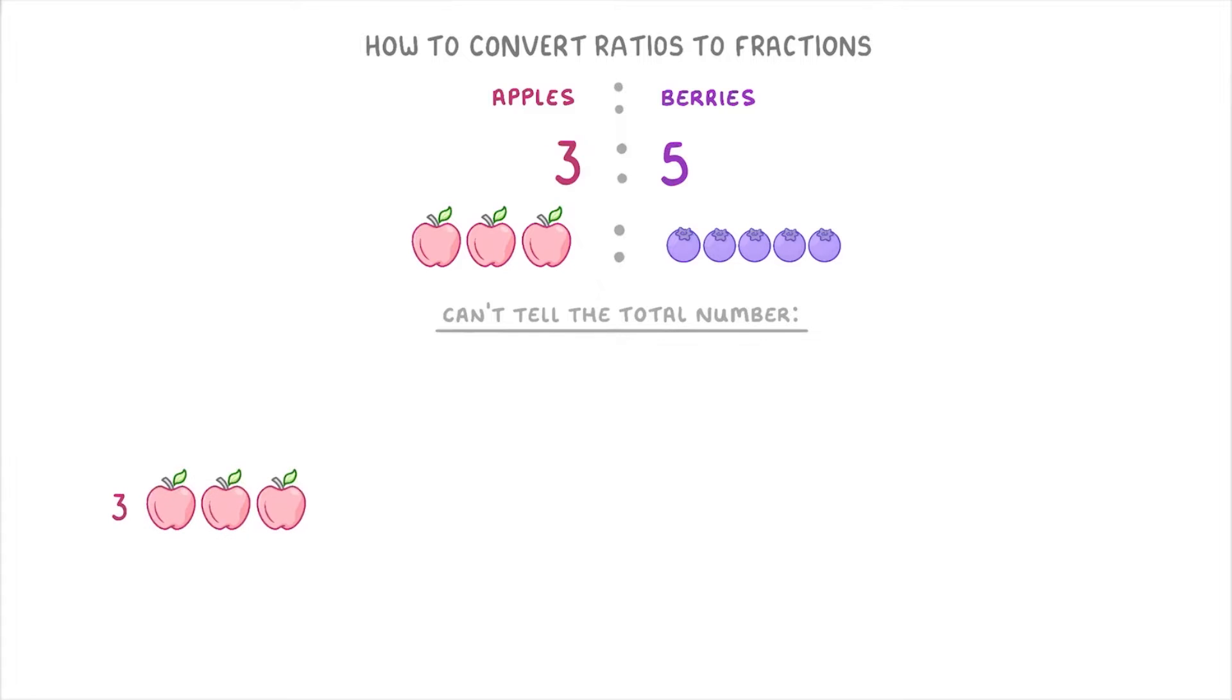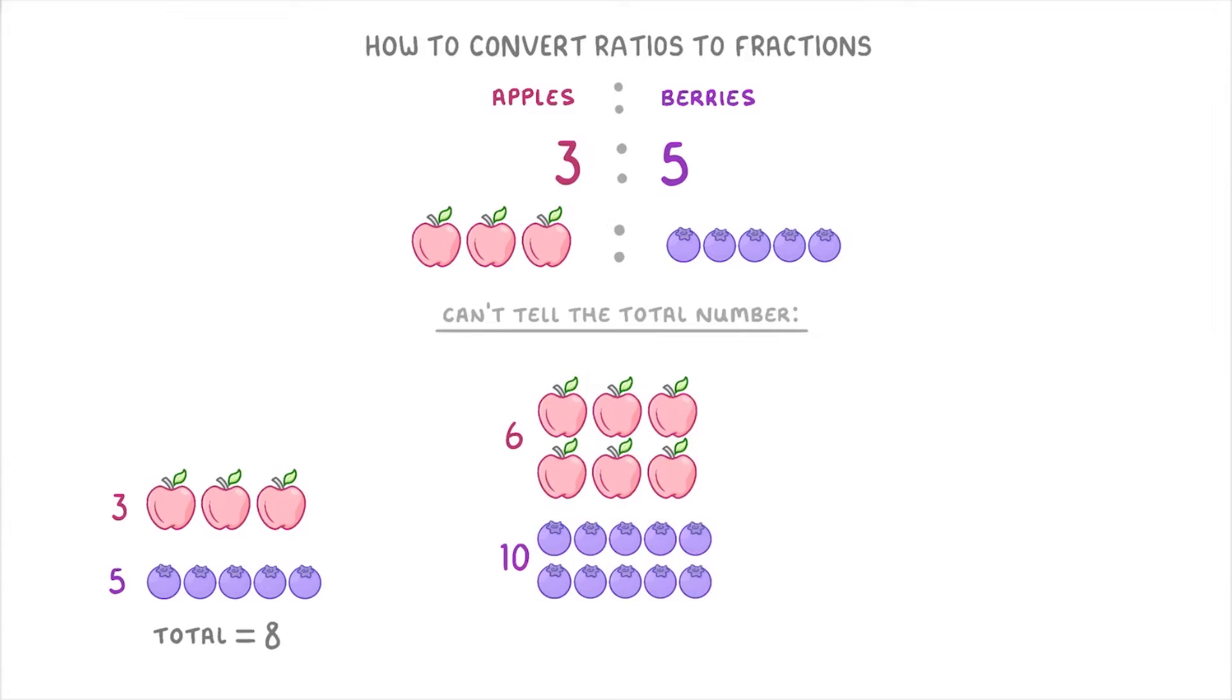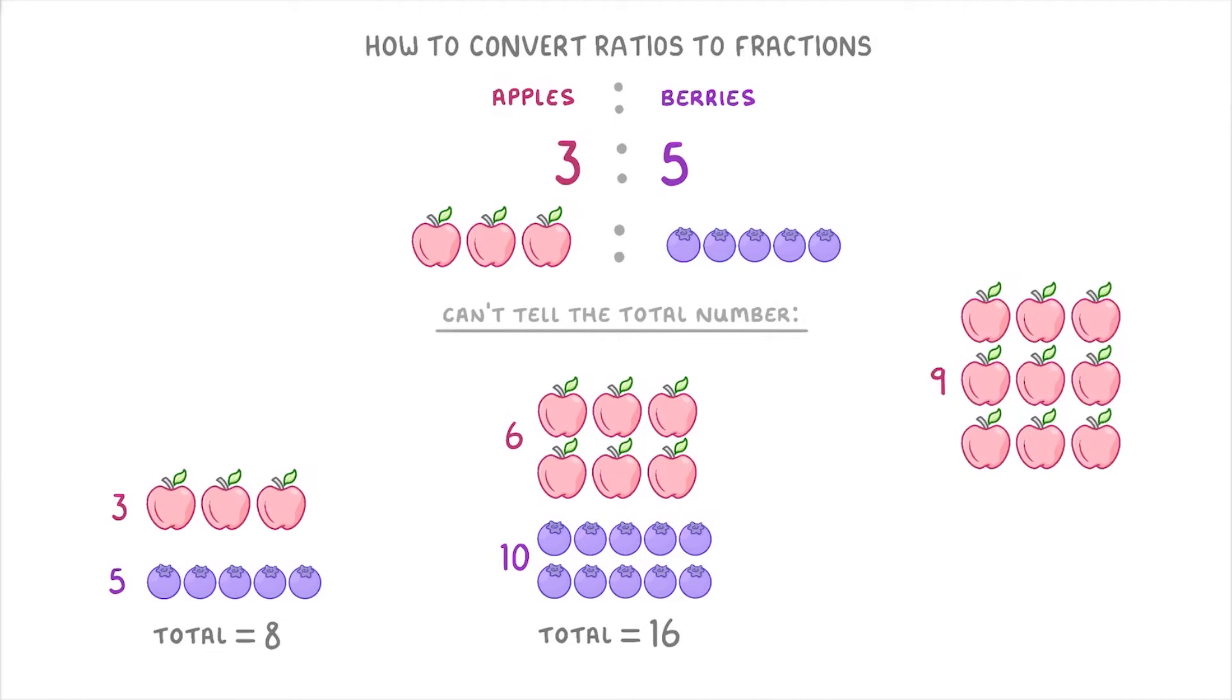For example, there could just be 3 apples and 5 berries, in which case there would be a total of 8 pieces of fruit. But there could also be 6 apples and 10 berries, so 16 pieces in total. Or 9 apples and 15 berries, giving us 24 in total.